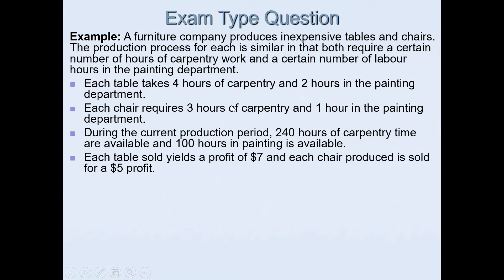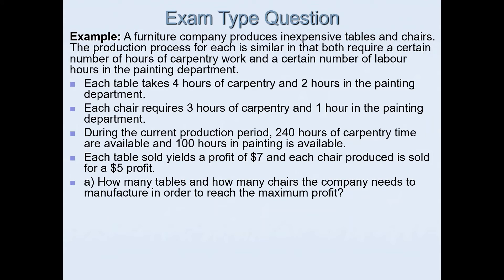Each table sold yields a profit of seven dollars and each chair produced is sold for a five dollar profit. The question asks how many tables and how many chairs the company needs to manufacture in order to reach the maximum profit.